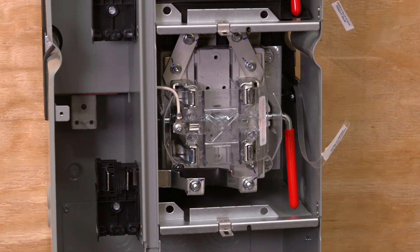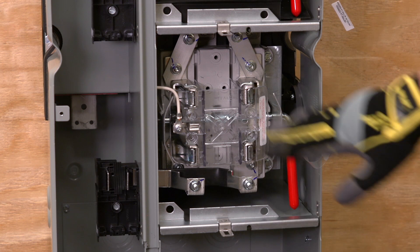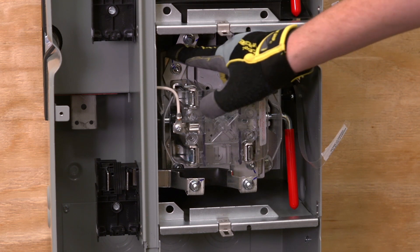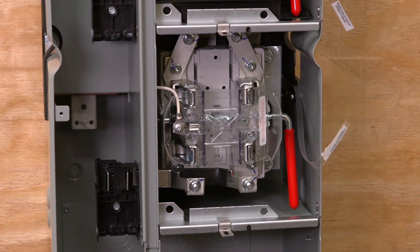In 125 amp stacks that have three incoming phases and a single phase out, the meter positions can be re-phased in the field. Keep in mind this does not apply to the 225 amp lever bypass stacks which must be factory phased.